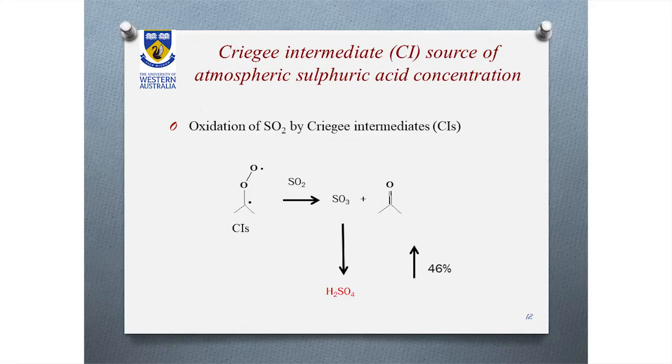Recent experimental and computational studies have shown that the concentration of sulfuric acid in the atmosphere could be as high as 46% at the ground level, which is attributed to the oxidation of SO₂ to sulfuric acid by the Criegee intermediate. This means that the amount of sulfuric acid in the atmosphere is significant enough to be considered as a catalyst.